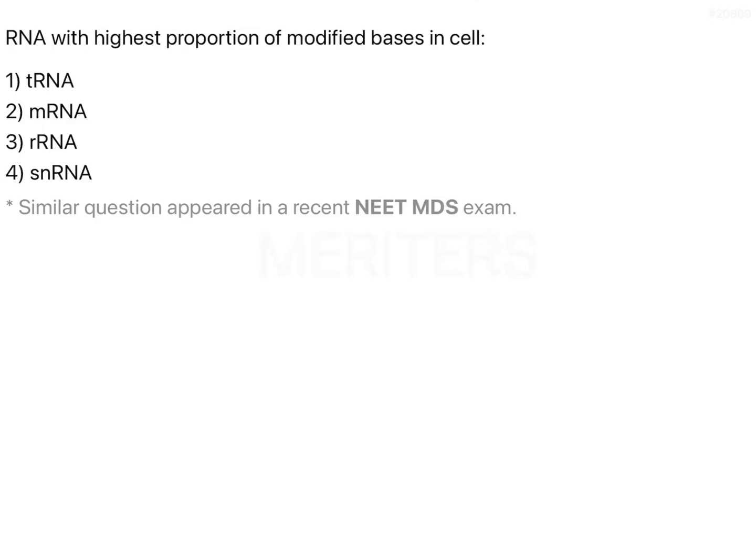The question is: which RNA has the highest proportion of proteins? Let's first understand — there are three types of RNA: mRNA, tRNA, and rRNA. mRNA stands for messenger RNA, tRNA stands for transfer RNA, and rRNA stands for ribosomal RNA. So you have three types of RNA.